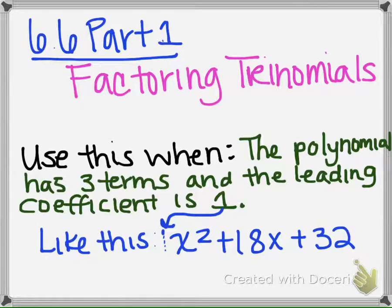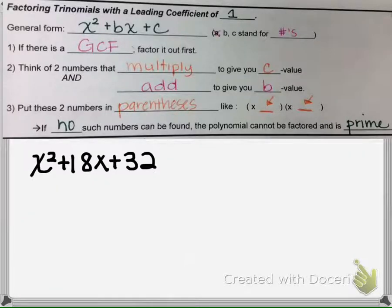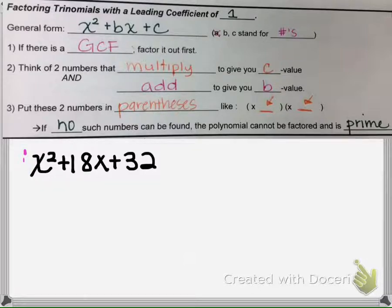This video will go over how to factor trinomials. The trinomials we're going to focus on will have a leading coefficient of 1 — so in front of the highest degree term, there will be no number, it will be a 1. We use this method because there are three terms and essentially a 1 in front.